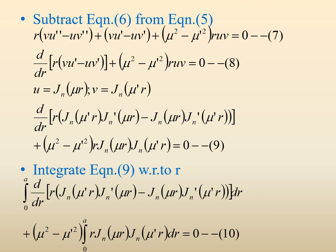Taking u = Jn(μr) and v = Jn(μ'r), we can write the equation as d/dr[r · Jn(μ'r) · Jn'(μr) − Jn(μr) · Jn'(μ'r)] + (μ² − μ'²)r · Jn(μr) · Jn(μ'r) = 0.